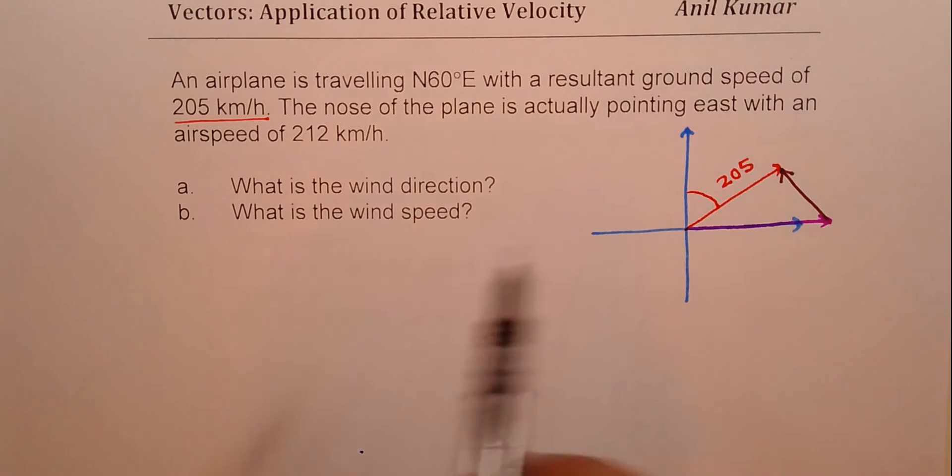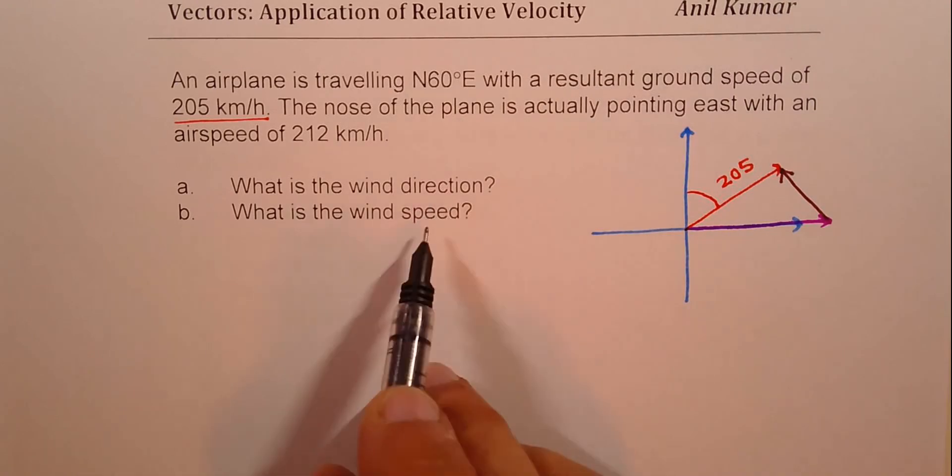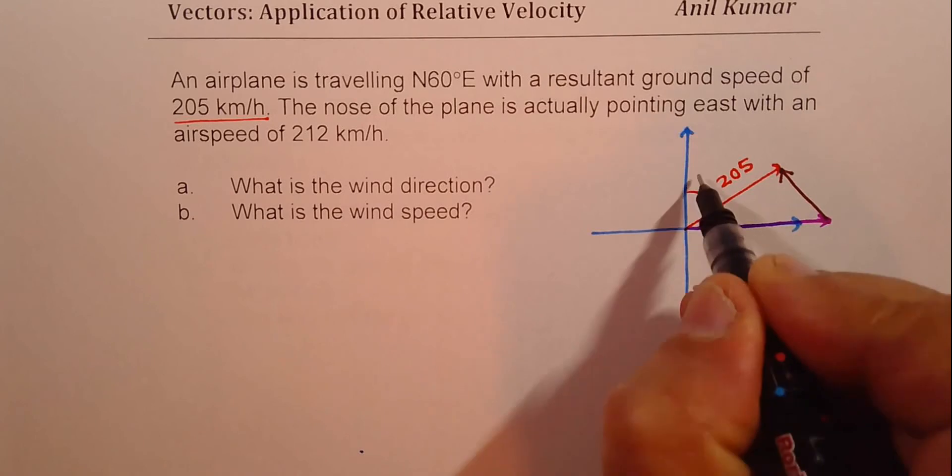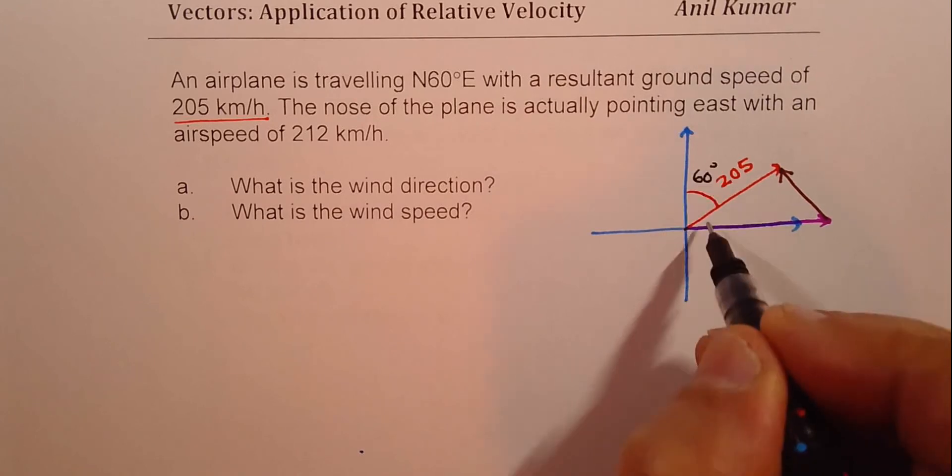We need to find the wind direction and the wind speed. Now, this angle here is 60 degrees. And this will be 30 degrees. Total is 90 degrees. Here, we are considering north.